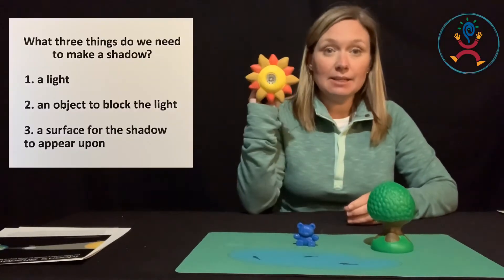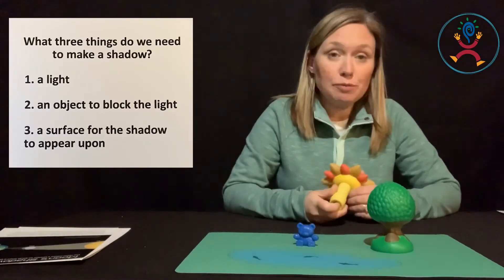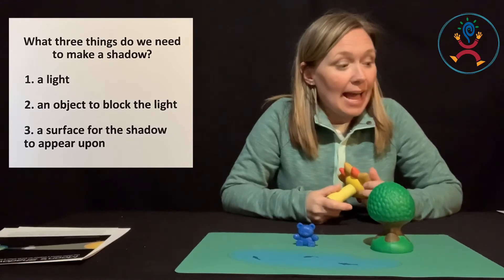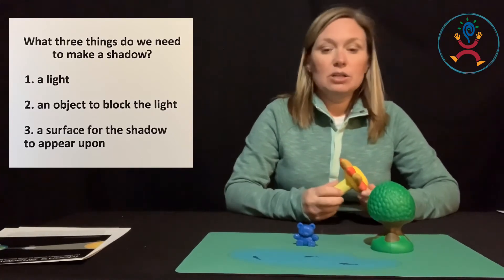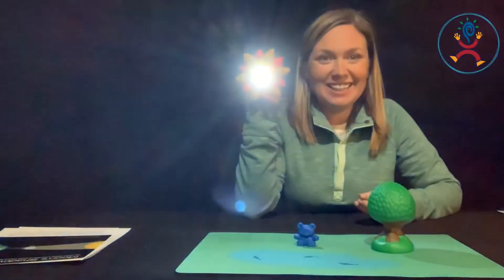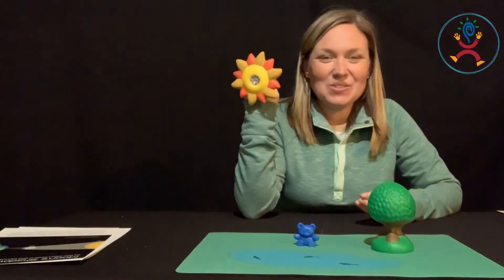Okay, well, you need three things to make a shadow. You need a light. You need an object to block the light. And a surface for the shadow to appear upon. So today I have this flashlight as my light source.